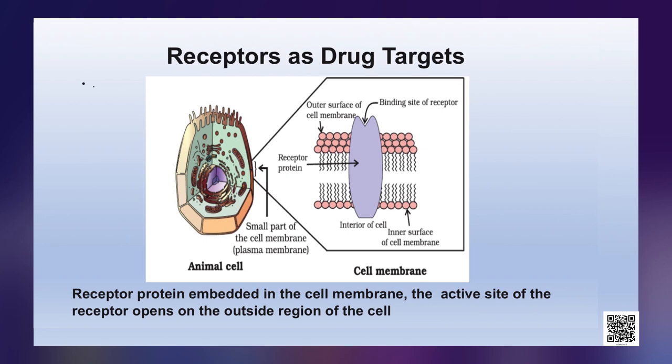Now we will discuss receptors as drug targets. Receptors are proteins that are crucial to the body's communication process. The majority of these are embedded in cell membranes. Receptor proteins are embedded in the cell membrane in such a way that their small part possessing the active site projects out of the surface of the membrane and opens on the outside region of the cell membrane.